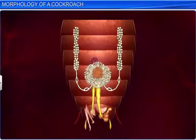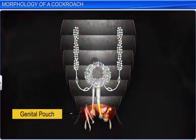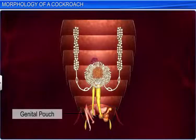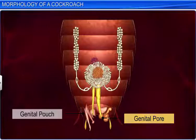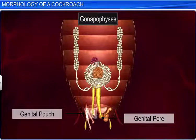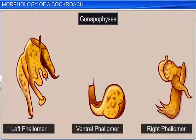In males, the genital pouch lies towards the end of the abdomen, and contains the dorsal anus, the ventral male genital pore, and the gonopophysis. The genital pouch is surrounded dorsally by the ninth and tenth turga, and ventrally by the ninth sternum.